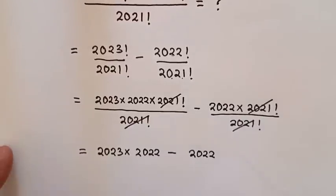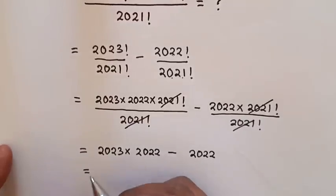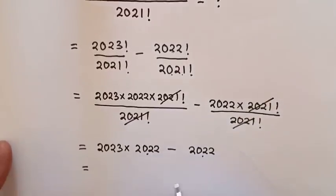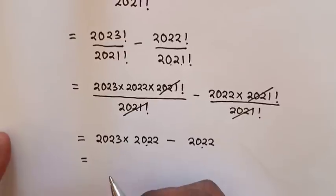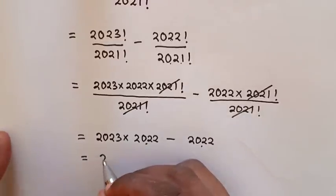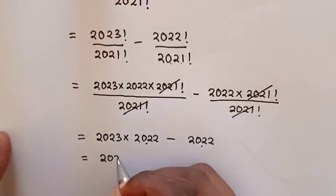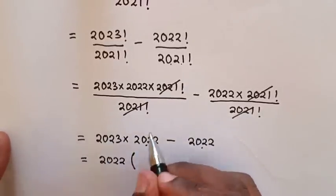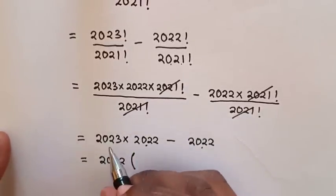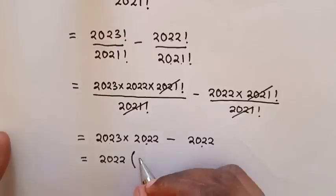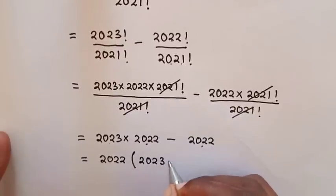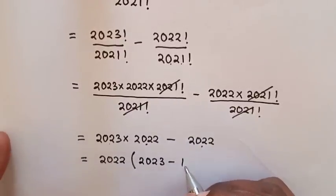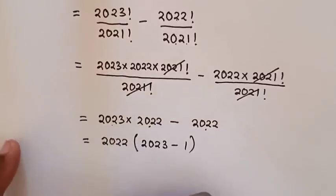Then it will be equal to — from here, we can see 2022 is common. So, 2022 out of brackets: inside the bracket, 2023 divided by 2022 gives 2023, minus 1 (since 2022 divided by 2022 is 1). Then it will be equal to 2022 times (2023 minus 1), which is 2022 times 2022.